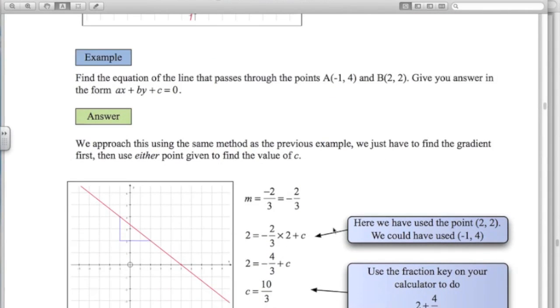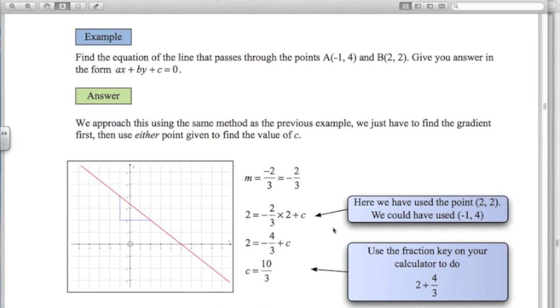Another example here is when we want to write the equation of a line in the form ax plus by plus c equals 0. Where a, b, and c are going to be integers. And normally the value of a is positive. So if we do the same thing here, we start with the 2 points. I'd definitely draw this line out. Even if you're not given the grid, draw it out. Here we've got the point at minus 1, 4. A point at 2, 2.